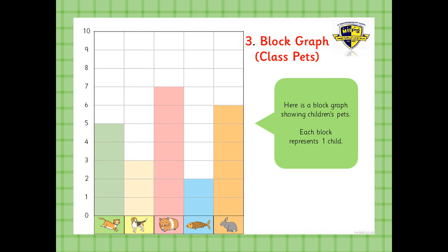Number three — class pets. Here is a block graph showing children's pets. Each block represents one child. So look at the rabbit, and there's a fish, a hamster, a dog and a cat. If we want to see how many pupils have a rabbit, I count the blocks. One, two, three, four, five, six. So I put six at number one.